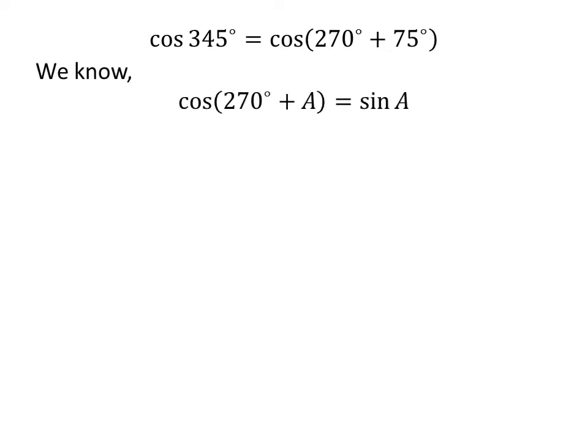We know the trigonometry identity: cosine of 270 degrees plus A is equal to sine of A. The proof of this trigonometry identity is explained in the video appearing in the upper right corner of this video. The link of the video is also given in the description section. So cosine of 345 degrees is equal to sine of 75 degrees.